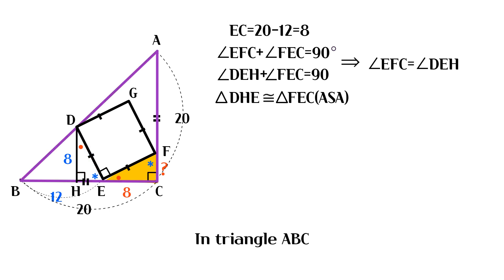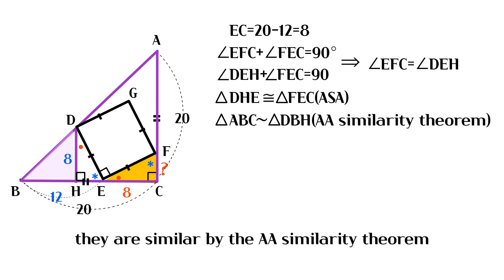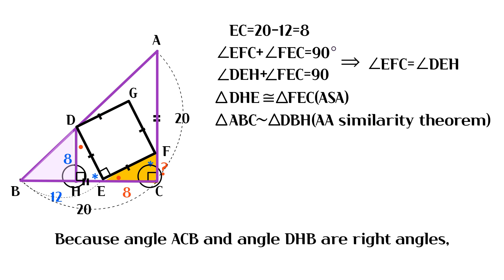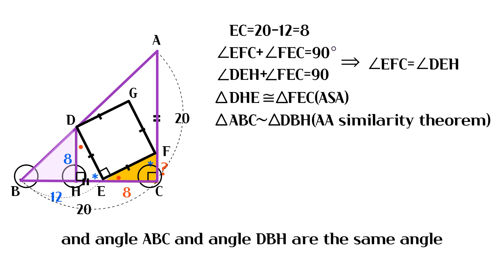In triangle ABC and triangle DBH, they are similar by the AA similarity theorem. Because angle ACB and angle DHB are right angles, and angle ABC and angle DBH are the same angle.